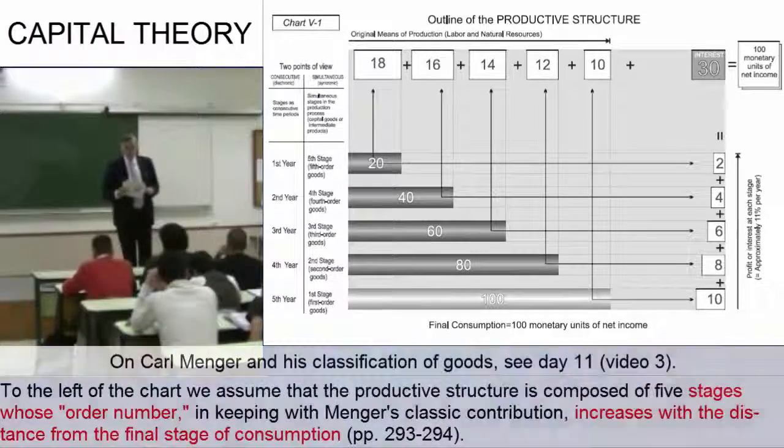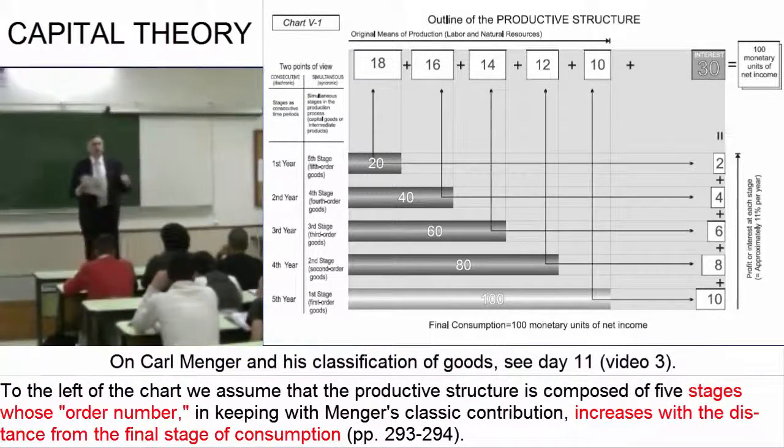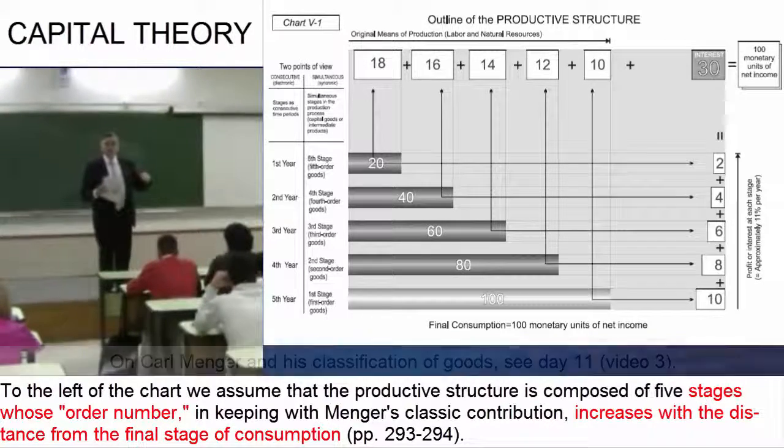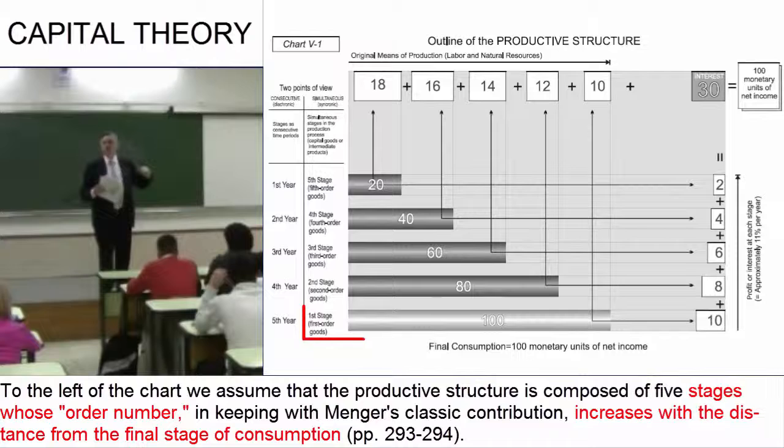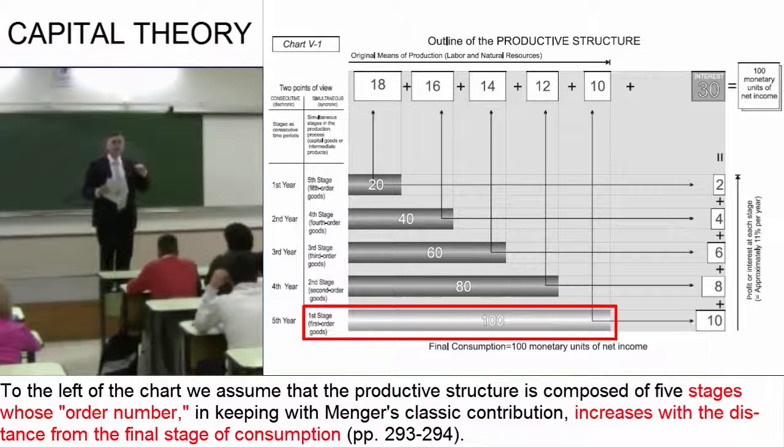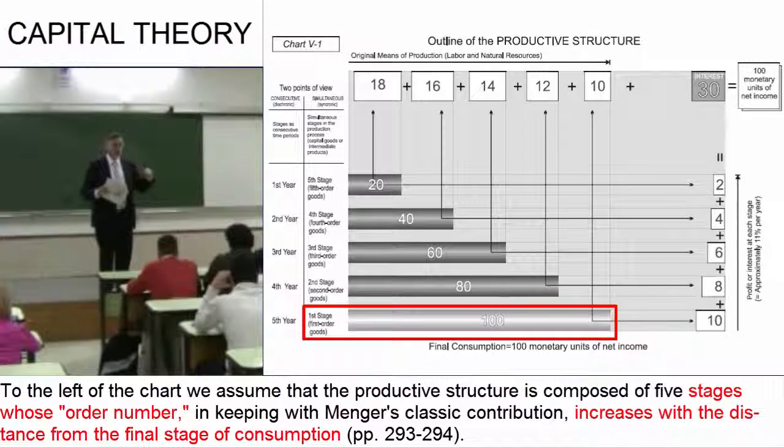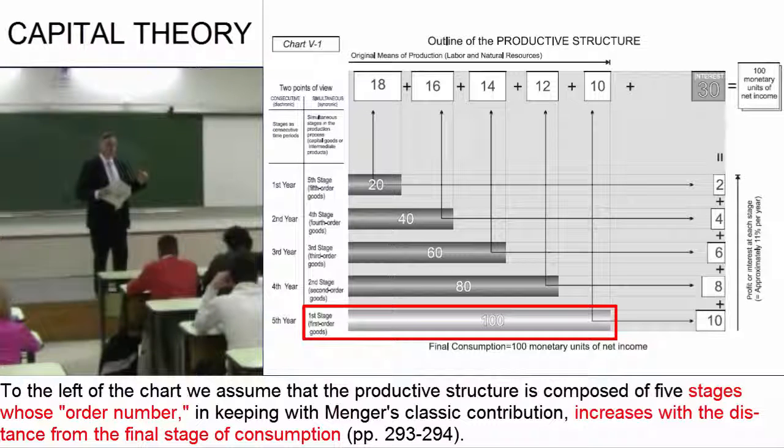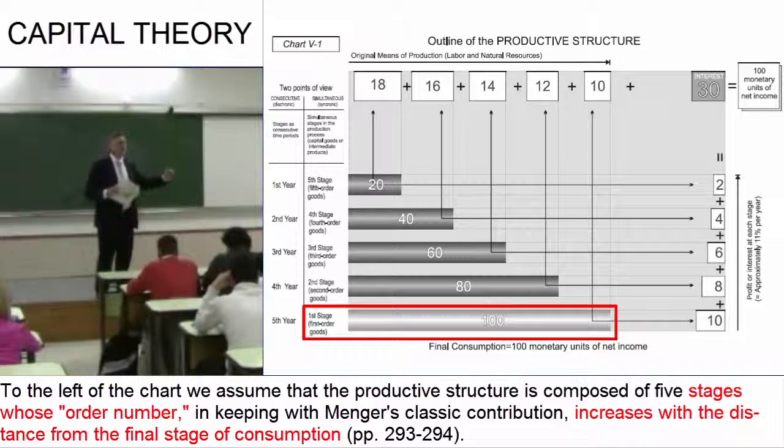Also, in a way, the chart reflects Menger's conceptualization of the production process. Remember that Menger used the term 'economic goods of first order' to refer to those goods which directly satisfy human needs. In other words, goods which correspond to the end an action is meant to achieve.